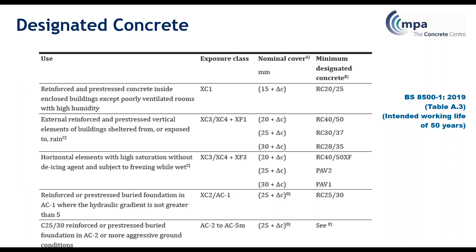The various tables within BS8500 relating to designated concretes include Table A3, which gives example uses of designated concrete, showing the minimum designated concrete for that use, the cover, and the appropriate exposure class. For example, for an external concrete vertical element with exposure class XC3/4 plus XF1 — where there's a possibility of freeze-thaw — it gives you the designated concrete options. I've highlighted RC-3037, where you'd need a nominal cover of 25 plus the standard deviation.